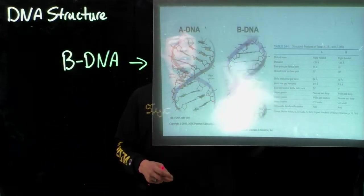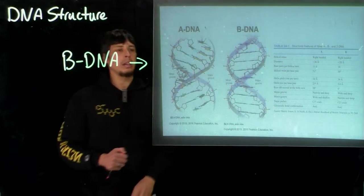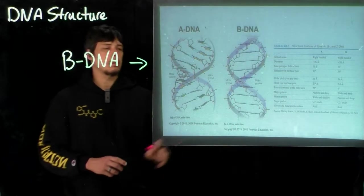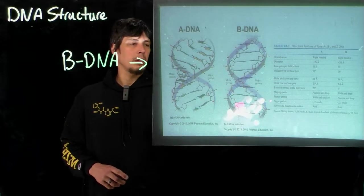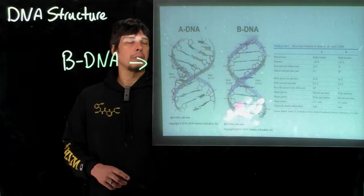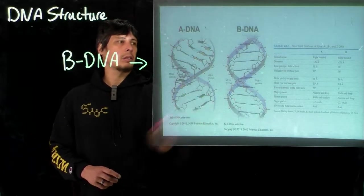Now there are more than one form of DNA. Two that we're going to look at are A-DNA and B-DNA. So this is B-DNA on the right-hand side, and I just showed you this in the last slide. And then on the left-hand side is called A-DNA.